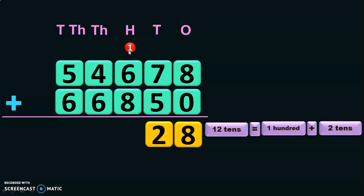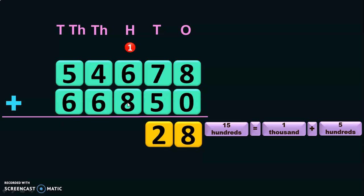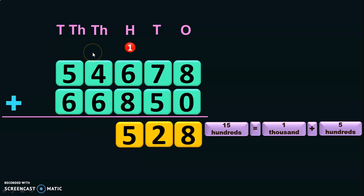Next, add the digits in the hundreds place: 1 plus 6 is 7, and 7 plus 8 is 15 hundreds. Regroup 15 hundreds: you will get 1 thousand plus 5 hundreds, so the 5 hundreds is retained in the hundreds place and 1 thousand is taken as a carry-over to the thousands place.